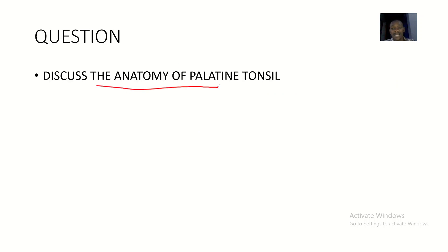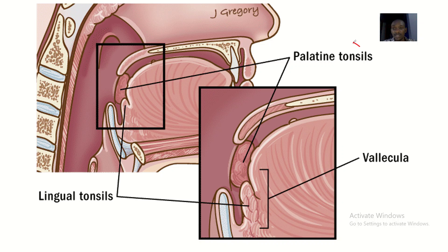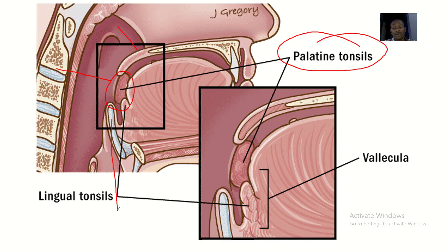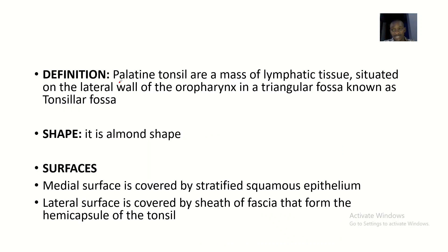So what is the anatomy of the palatine tonsil? The palatine tonsil is located at the oropharynx — if we divide the pharynx into the nasopharynx, oropharynx, and laryngopharynx, the palatine tonsil is located at the oropharynx. The palatine tonsils are a mass of lymphatic tissue. Anything lymphatic provides protection, stopping infections. It is a mass of lymphatic tissue situated on the lateral wall of the oropharynx.